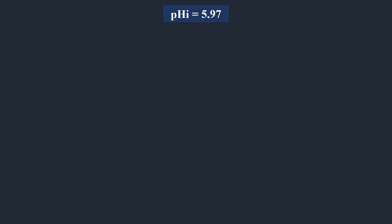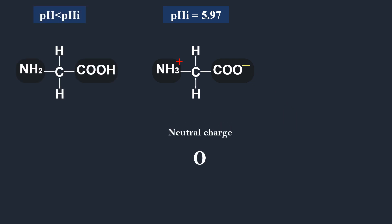The isoelectric point or pHi of glycine is equal to 5.97. At this pH glycine carries neutral charge, due to the gain and loss of protons. At a pH below its pHi, glycine carries a net positive charge. And at a pH above its pHi, it becomes negatively charged.